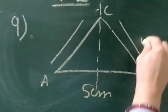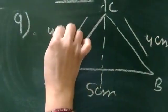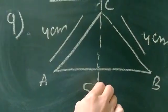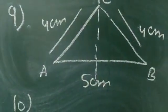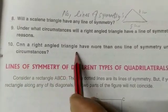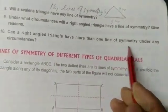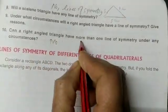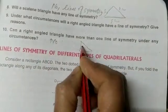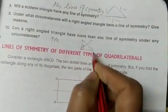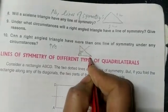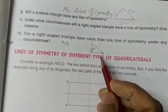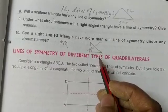Question 10: can a right-angle triangle have more than one line of symmetry under any circumstances? The answer is no. A right triangle has one 90-degree angle and can have at most one line of symmetry; in other cases it is not possible. So write: no. This is all about Worksheet 2. Next time we will discuss Worksheet 3 — practice it. Thank you and have a nice day.